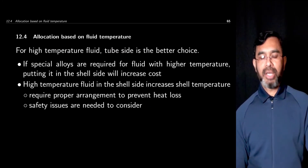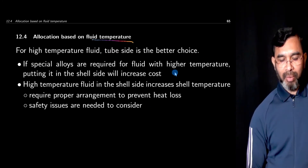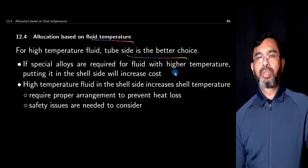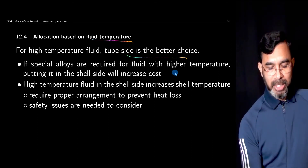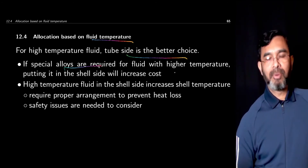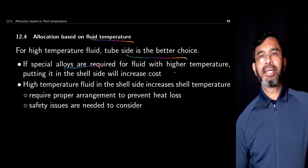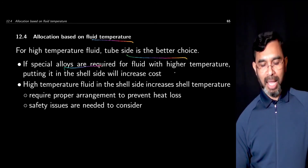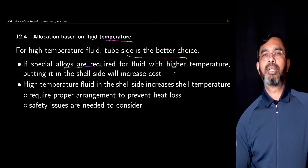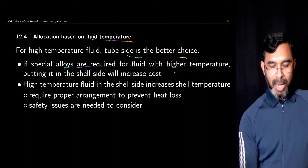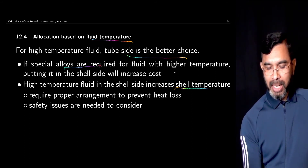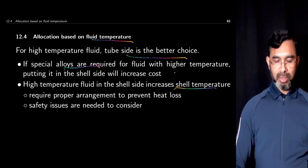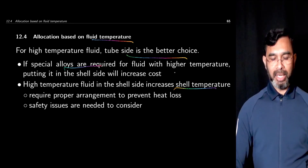When considering fluid temperature, for high temperature fluid the tube side is the better choice. If a special alloy is needed due to high temperature and you put this fluid on the shell side, all materials must be constructed using that special alloy. However, if you put it on the tube side, only the tubes need to be constructed with it. Also, high temperature fluid on the shell side increases the shell temperature and causes heat loss from the heat exchanger.